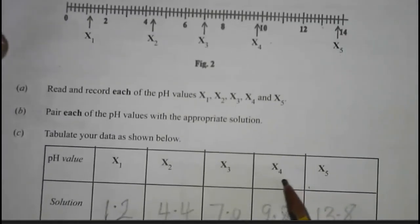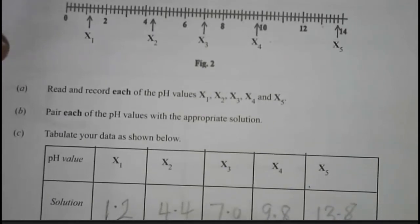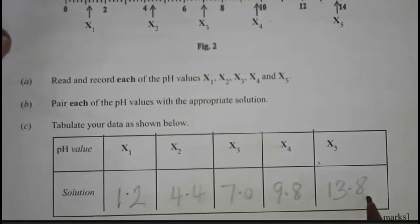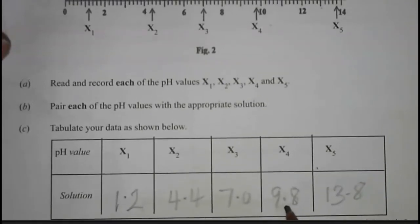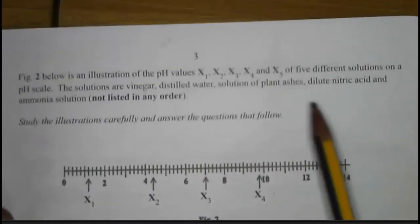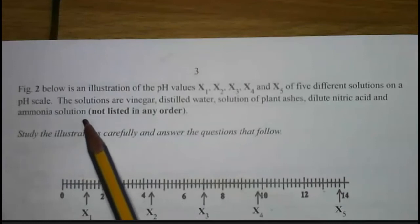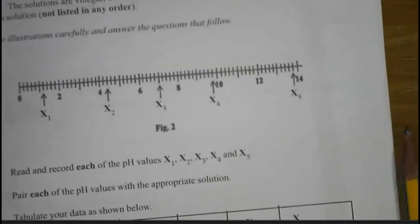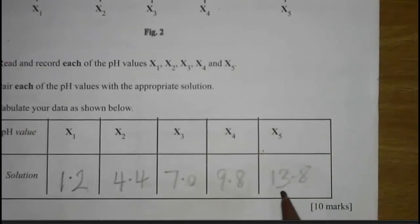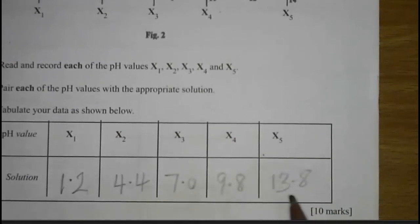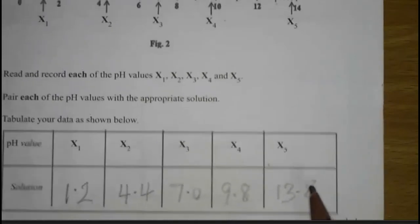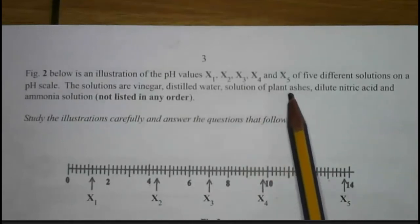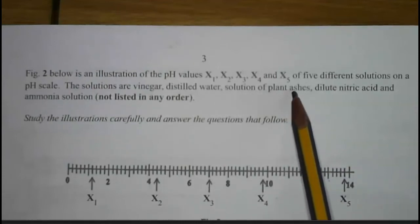X4 with a pH of 9.8 is alkaline but not as strong as 13.8, so x4 is a weak base. Among the listed substances, ammonia is a weak base, so we match x4 to ammonia solution. X5 has a pH of 13.8, making it a strongly alkaline solution, and solution of plant ashes contains potassium hydroxide which is a strong base, so we match x5 to solution of plant ashes.